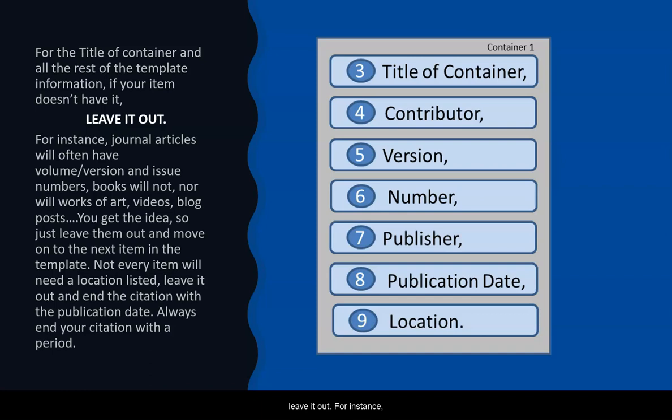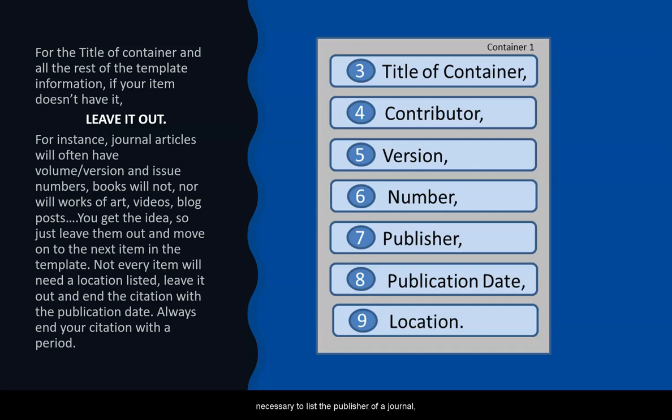For instance, journal articles often have volume or version and issue numbers, but books do not, so you would leave version out of a book citation. In an article citation, it is not necessary to list the publisher of a journal, so you would list the journal name as the title of container but leave out the publisher. Get the idea?